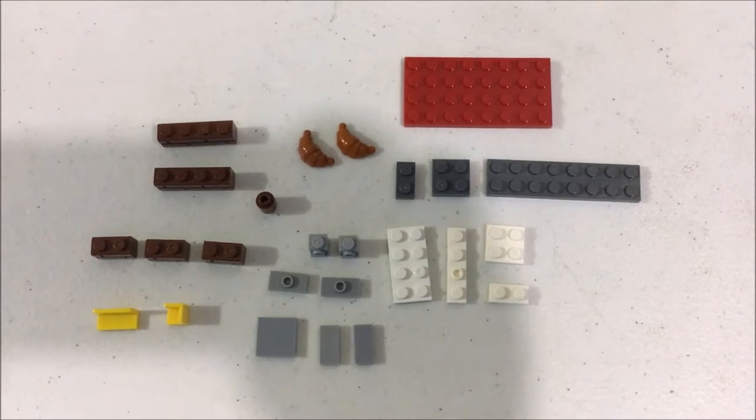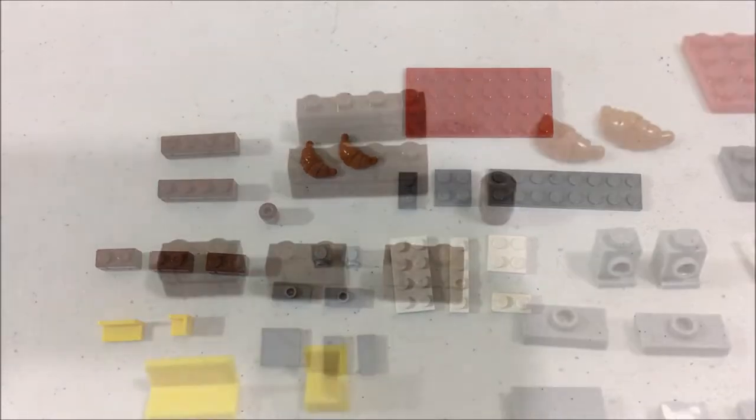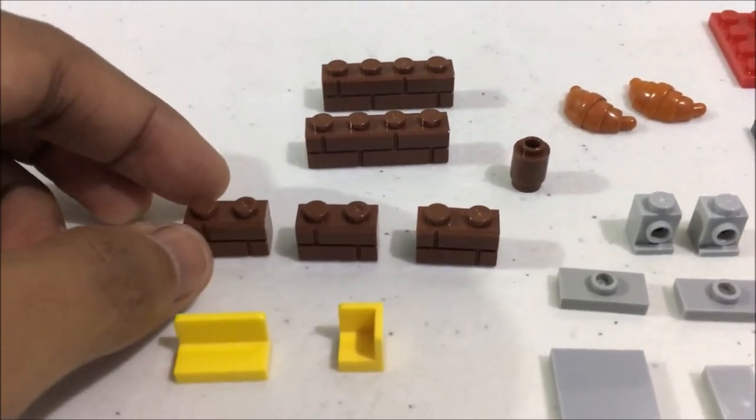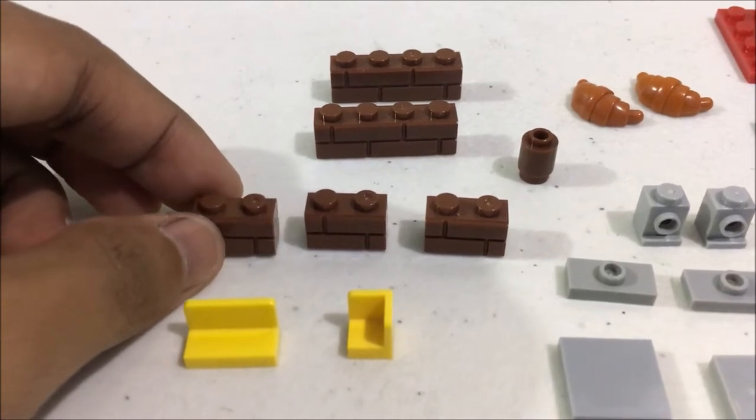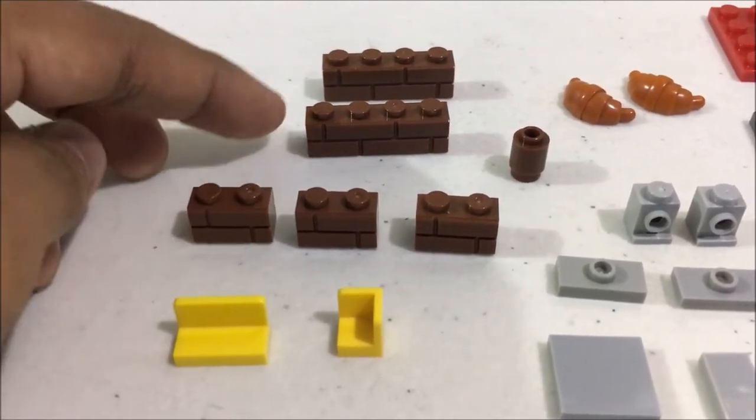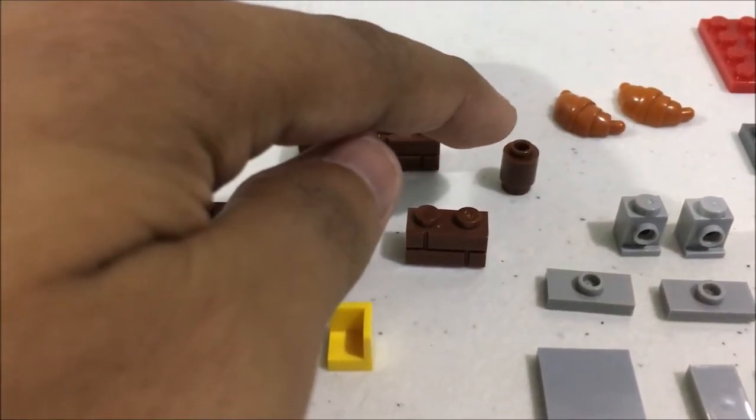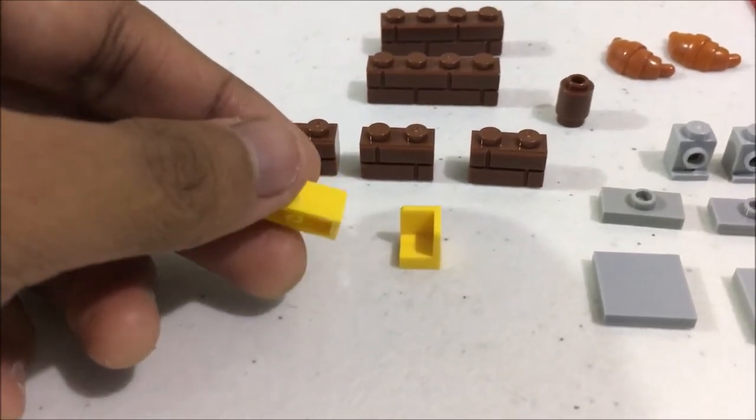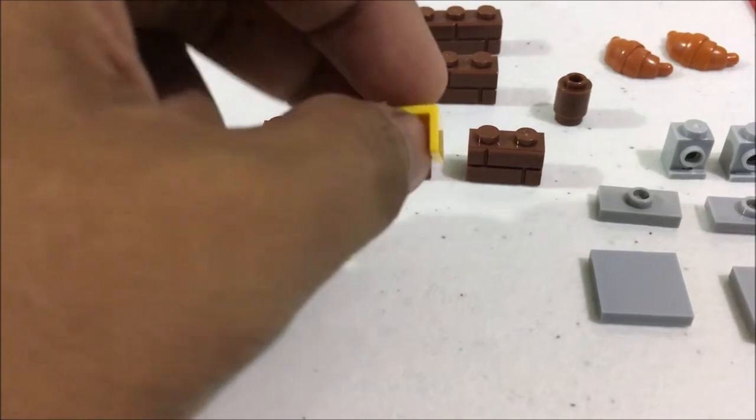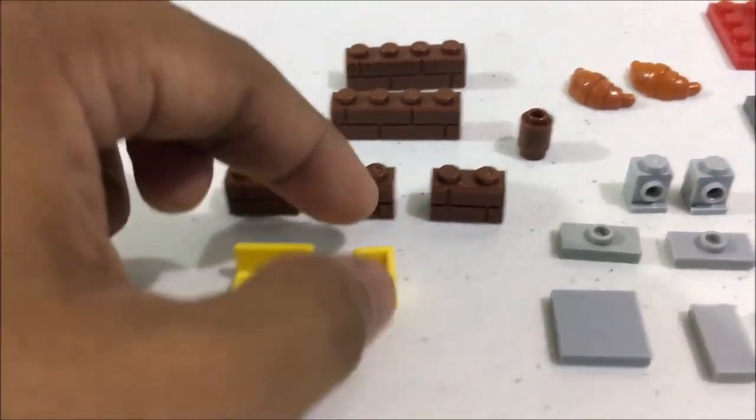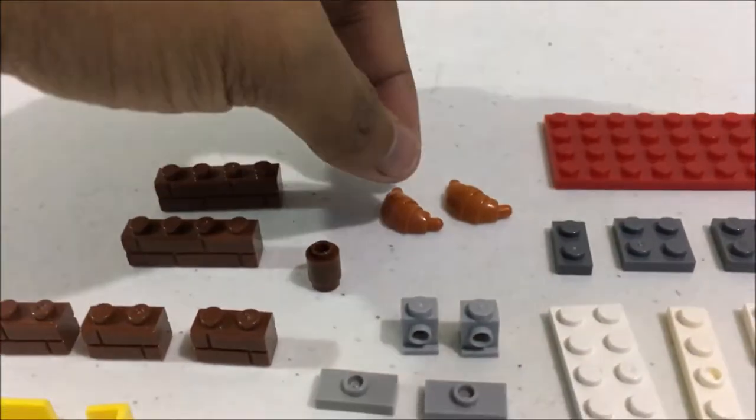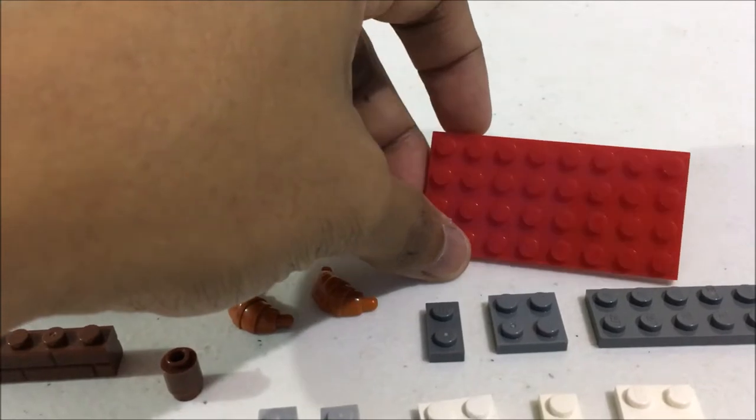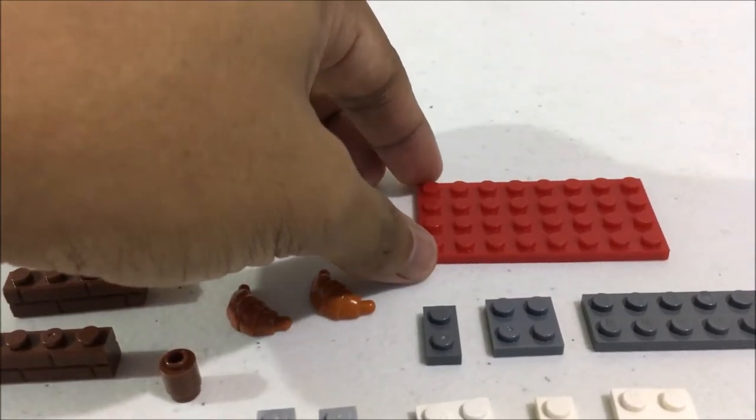These are the parts you're going to need to build the base of the croissant stand: two 1x4 modified brown bricks, three pieces of 1x2 modified brown bricks, one 1x1 round brick, one 1x2 panel piece, and one 1x1 corner panel piece. Of course you need the croissants, at least two of them. This is the base plate of the build, which is a 4x8 plate.